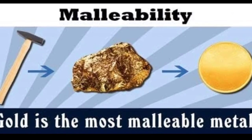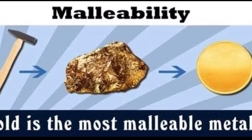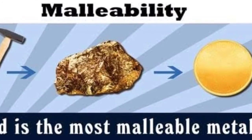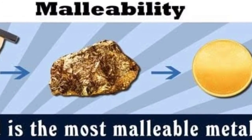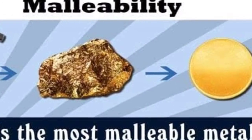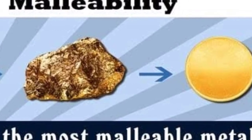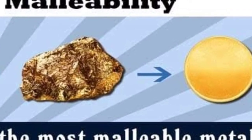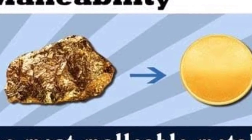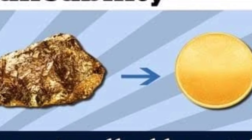Metals are malleable. Malleability means if you use a hammer, you can beat the metal into a fine thin sheet. So all metals are malleable — they can be turned into sheets. While non-metals are not malleable; non-metals cannot be beaten into sheets.